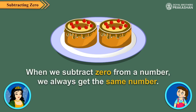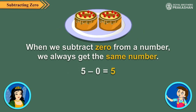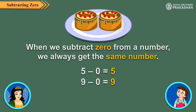Therefore, when we subtract zero from a number, we always get the same number. That means 5 minus 0 will be 5, and 9 minus 0 will be 9. That is right.